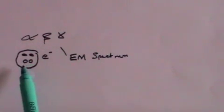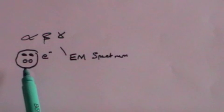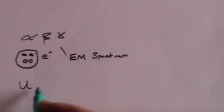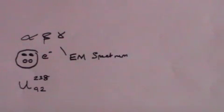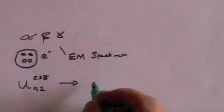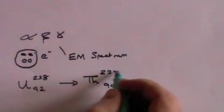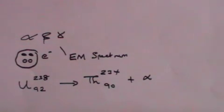Alpha particles tend to be emitted from the heavier atoms, those that have 82 or more protons in the nucleus. When an alpha particle is emitted from a nucleus, that nucleus will lose two protons and two neutrons. So if we take uranium, which has 92 protons and a total of 238 nucleons — meaning the number of neutrons is 238 minus 92, which is 146 — then that will produce thorium, which has 90 protons and 234 nucleons altogether, plus an alpha particle.